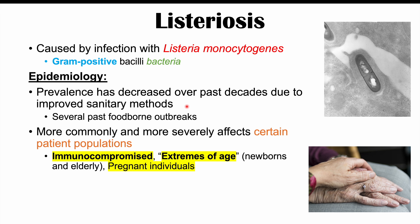Some of these patient populations include immunocompromised patients — so patients with HIV or AIDS, patients on immunosuppressive drugs, and patients who have diabetes. Another group is the extremes of age: newborns, neonates, and the elderly population are more at risk, both due to poor immune system functioning in general.